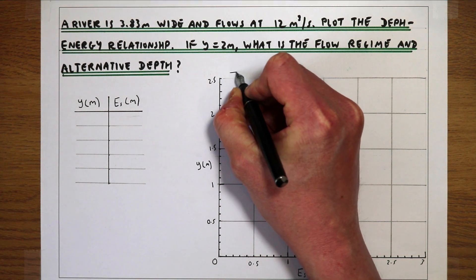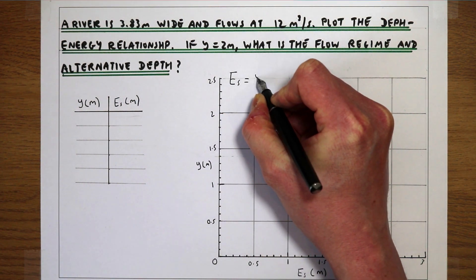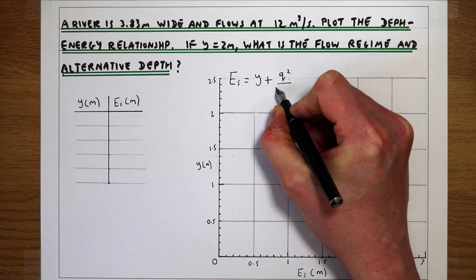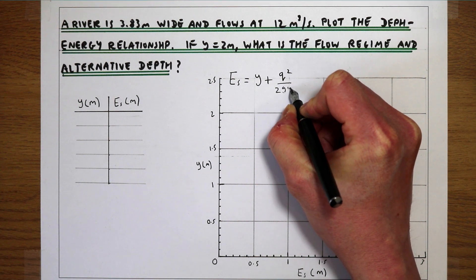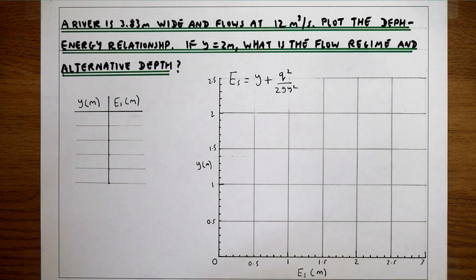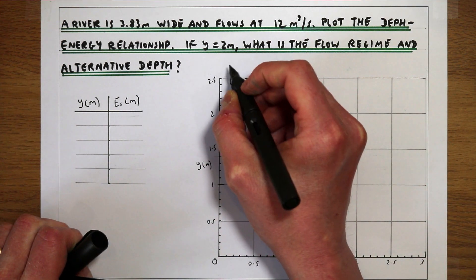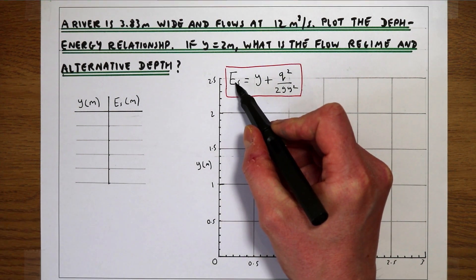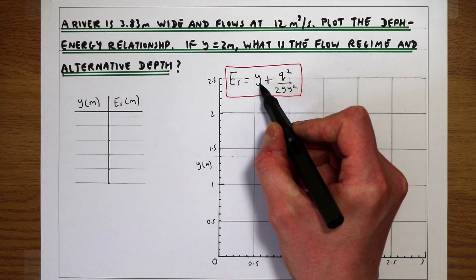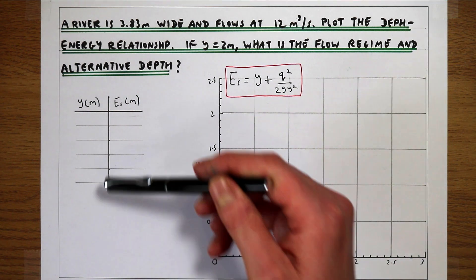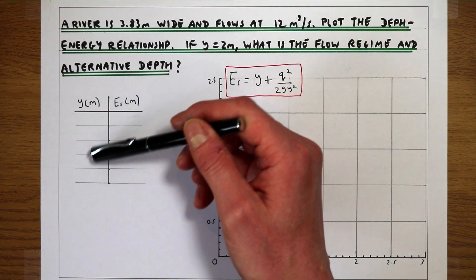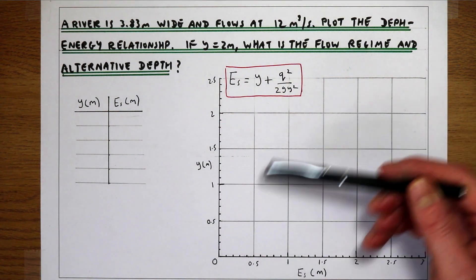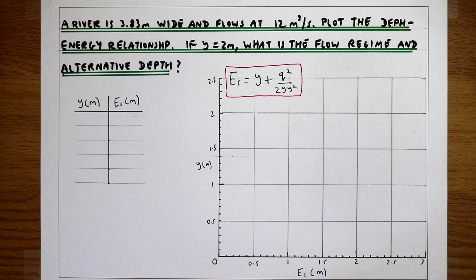A definition of specific energy is the flow depth plus the flow per unit width squared over 2g y squared. What we want to do in this question is plot values of specific energy versus values of y, the flow depth. We can draw a table where for several values of y we calculate values of specific energy and then plot that on a graph.